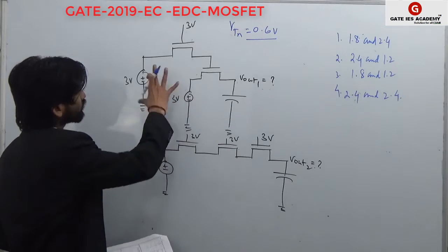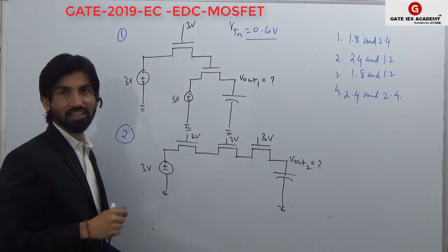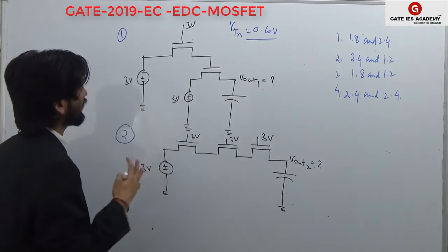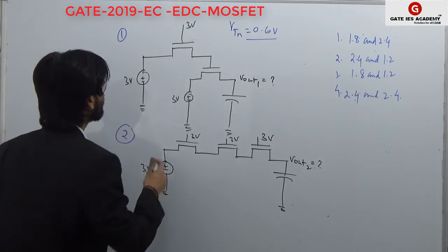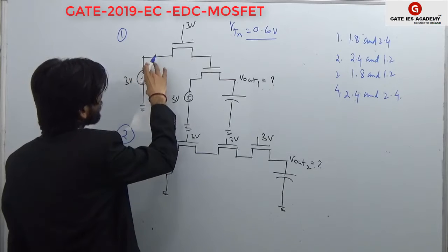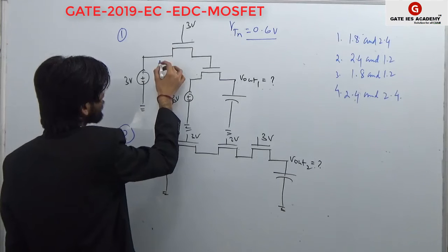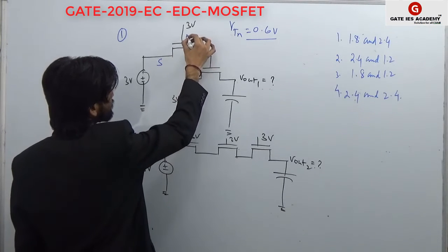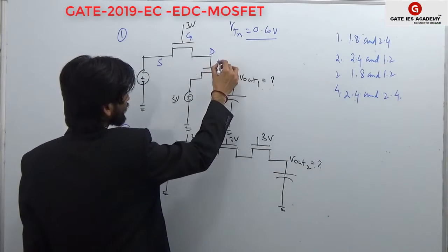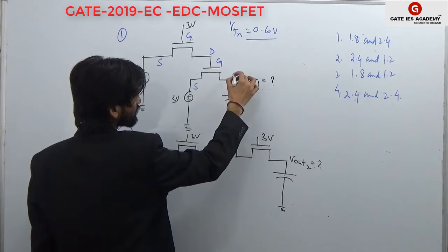We have got two circuits — circuit number 1 and circuit number 2 — with NMOS transistors connected. Let us first identify the terminals. We can say 3V is connected here. So this is source, this is gate, and this is drain. Here drain and gate are connected again. So this is source, this is gate, and this is drain.